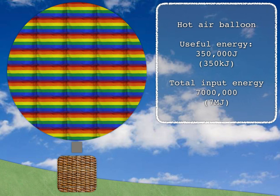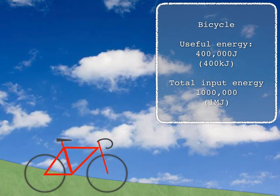On the other hand, if you cycle, you'd need to transfer about a million joules from your chemical to your kinetic store.